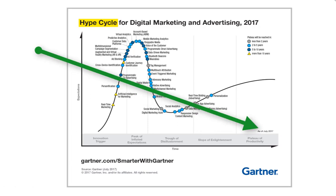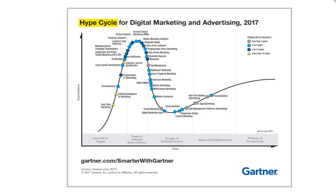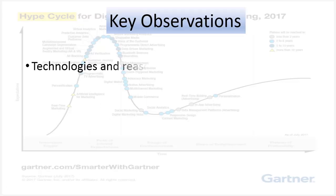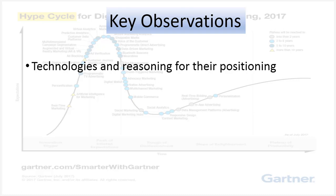As mentioned earlier, the hype cycle example diagram that we see here is normally included as part of a much more detailed report which Gartner issues to its client members only and is not available in the public domain. The accompanying report explains the various technologies that appear on this graph and the reasoning for their positioning. This can provide enough information to organizations to decide whether they want to take the risk of trying out the technology before it becomes mainstream.